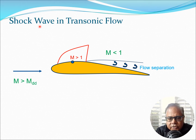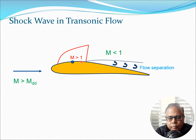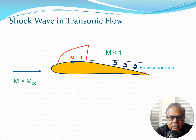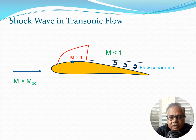If you continue flying faster and exceed the drag divergence Mach number, a shock wave forms on the top surface. Ahead of the shock wave M is greater than 1, but after the shock M becomes less than 1. This region of supersonic flow also leads to shock-induced flow separation, and the resulting flow separation causes the drag to increase significantly.